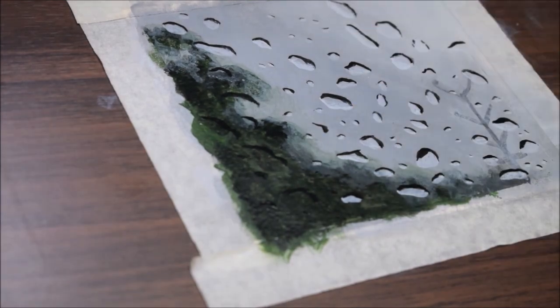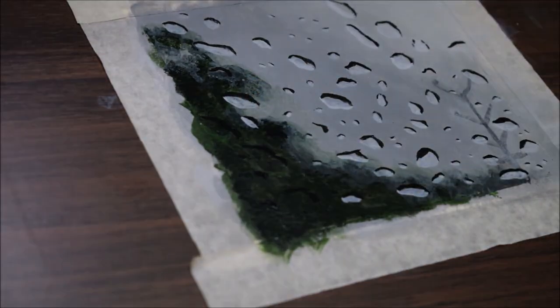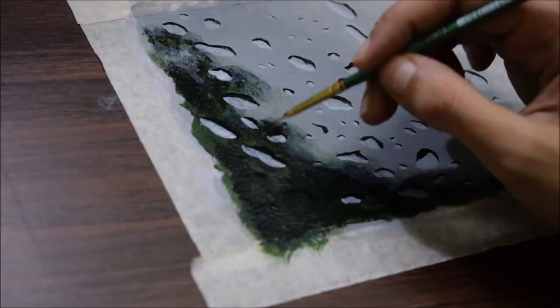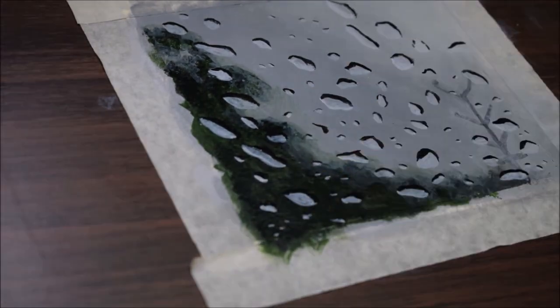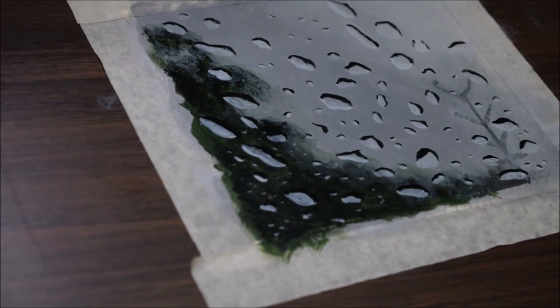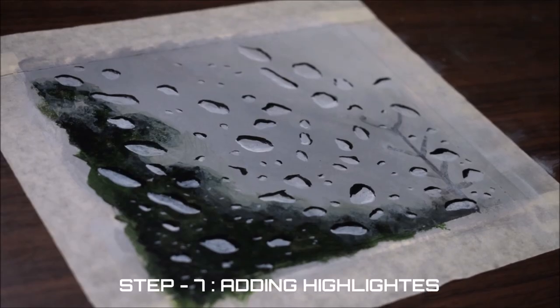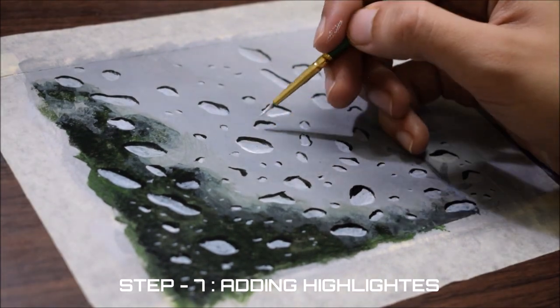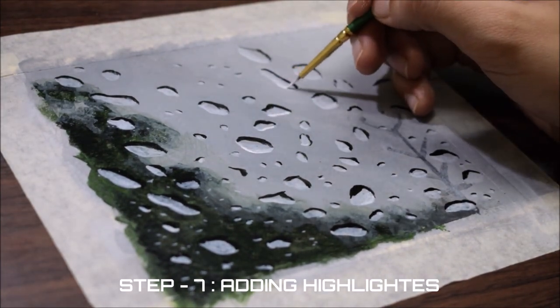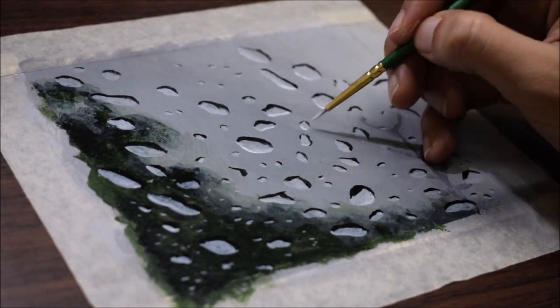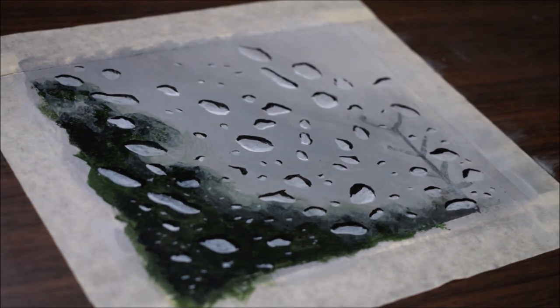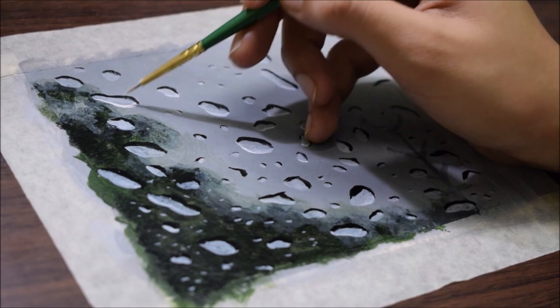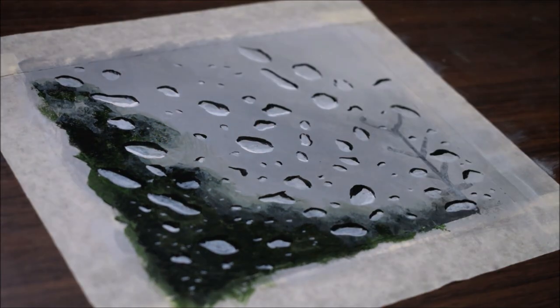You can have a closer look of the whole process from this side. Now the final step is to add highlights to the raindrops with undiluted white paint directly from the tube or bottle. Apply it to the half or one-fourth part of white outlines. This will make raindrops look more realistic and adds a 3D effect to it.